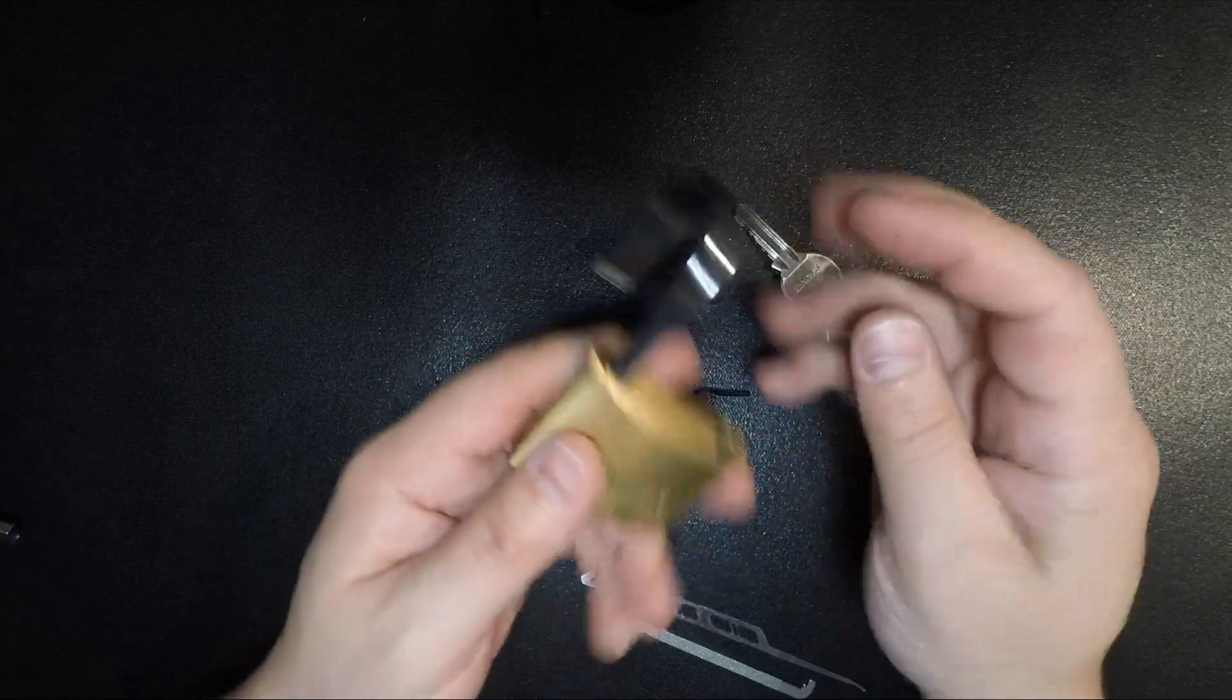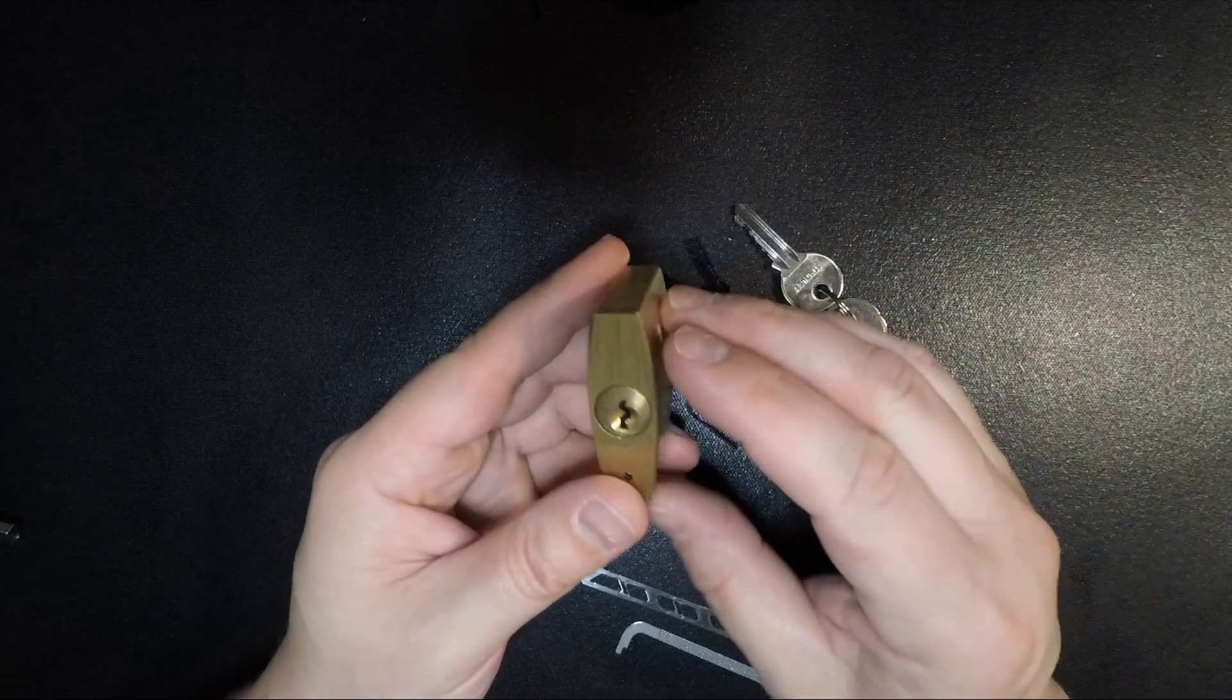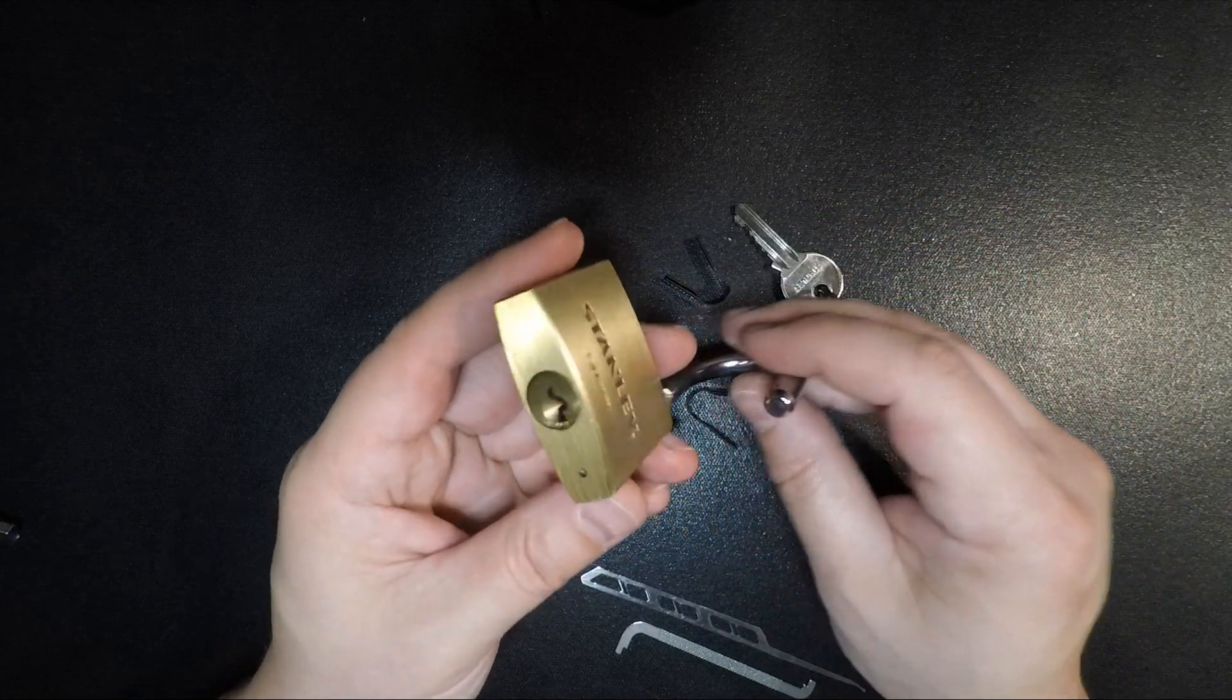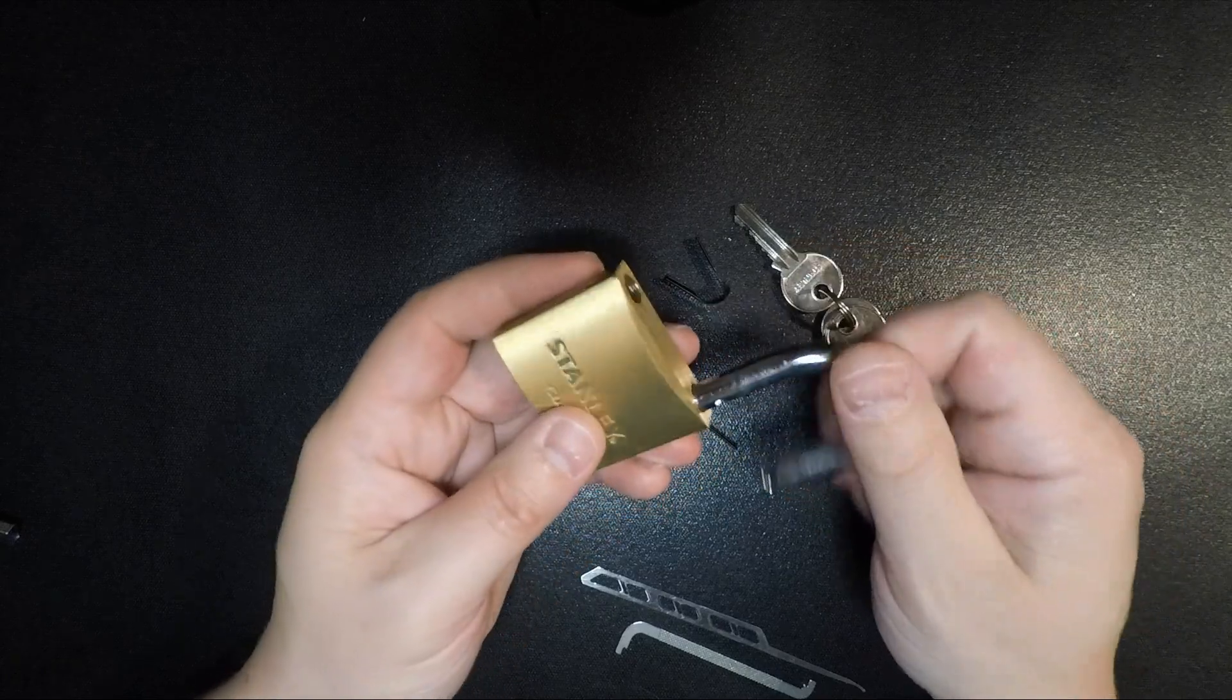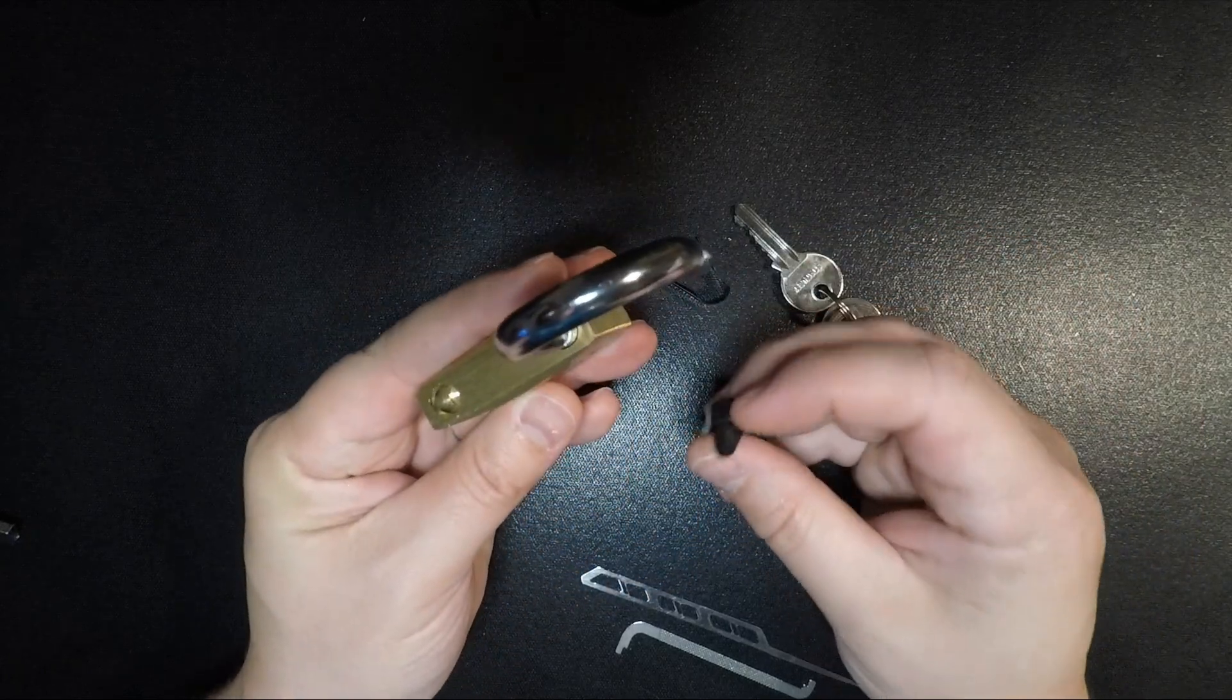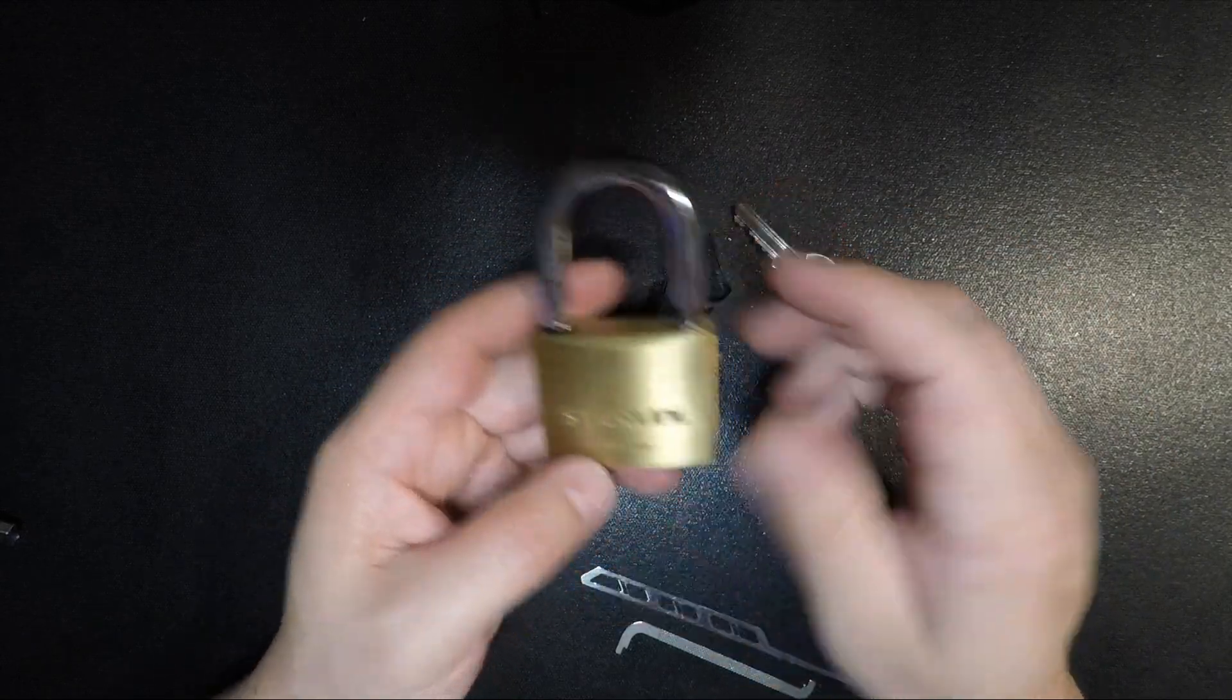So, two ways to get into this lock. Not a particularly challenging core. Although the Y1 keyway is something that is, I suppose, less encountered for your sort of just off-the-shelf locks at the big box store. And yeah, spring-loaded locking pawls lead to that weakness in being able to bypass the locking mechanism altogether.